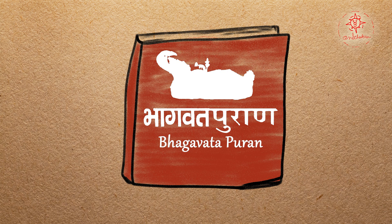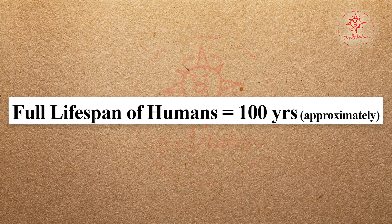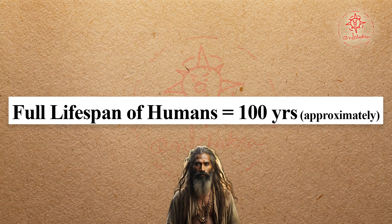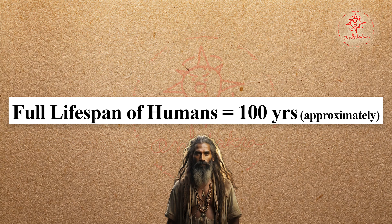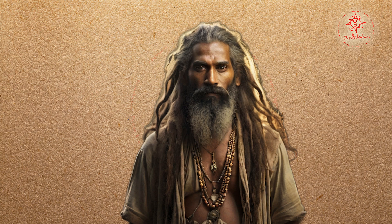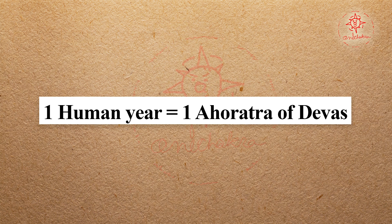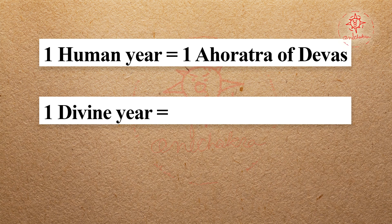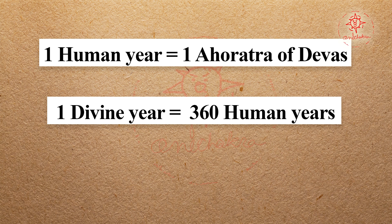A hundred years have been declared as the full life span of human beings. This calculation of one Vatsar or year is for humans, and it is equal to one full day of the Devas or gods. So one divine year is equal to 360 human years.